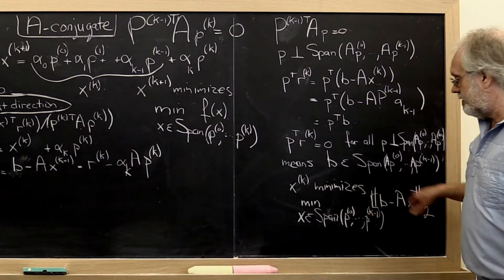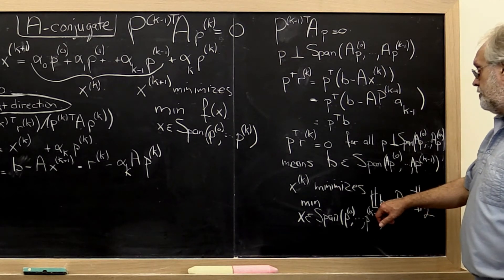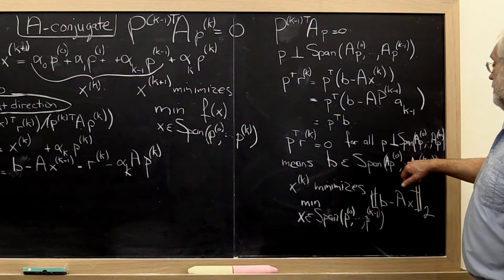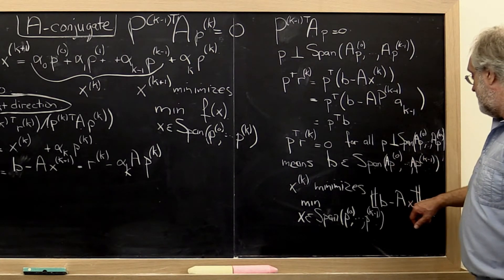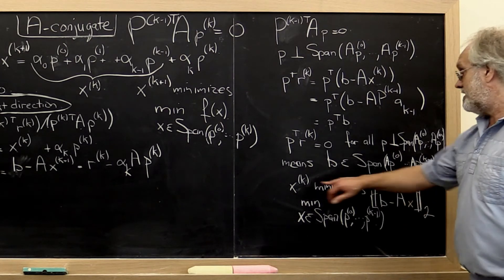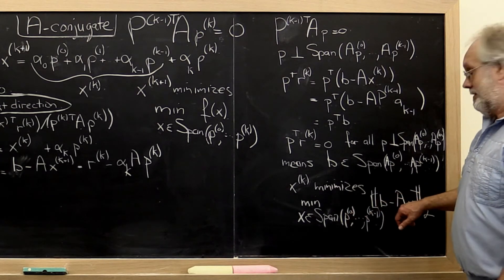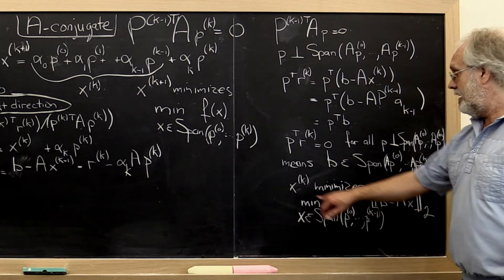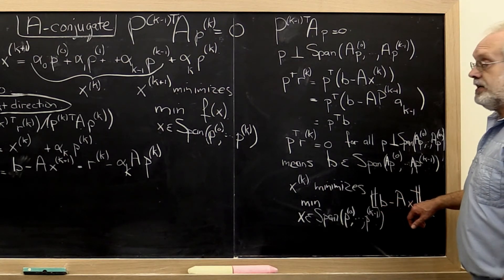xk minimized f of x over all the space spanned by all previous search directions. That was by assumption. And what that really means is that it minimizes the two-norm of this. So notice that if you stare at this hard enough, what you conclude is that B is a linear combination of the span of A times all of these search directions. A times x is in that span. A times xk was in that span but minimized this expression. And therefore xk must have the property that B is equal to A times xk.